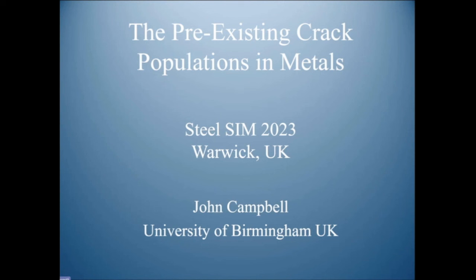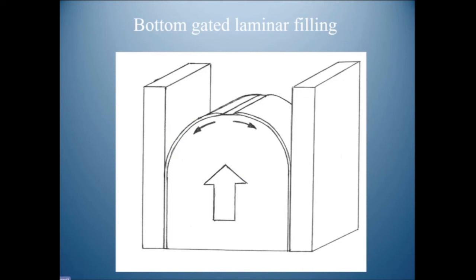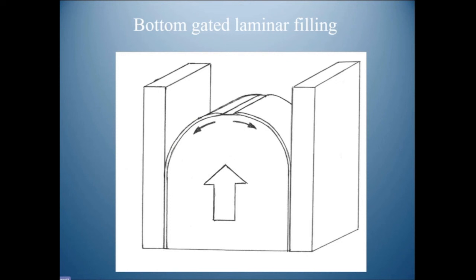That is a critical way to make good castings — if only it were true of the normal way we make castings. Normally nobody bothers to make castings this way. Most casting is done from the top, which is appalling, and this creates a lot of turbulence, churning in that oxide surface.